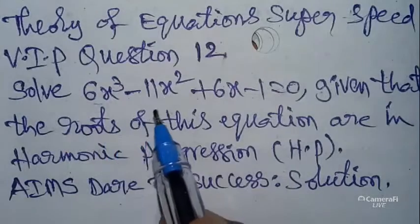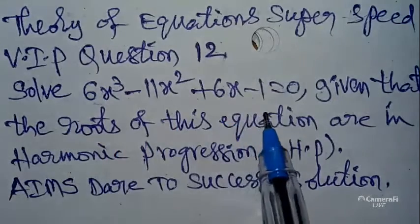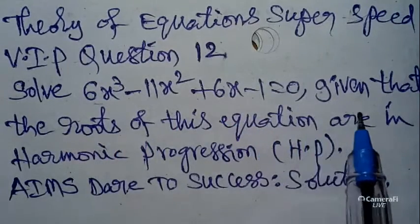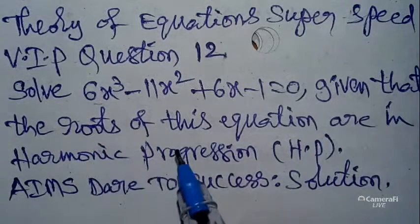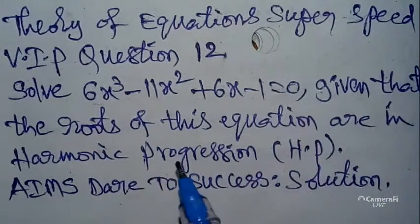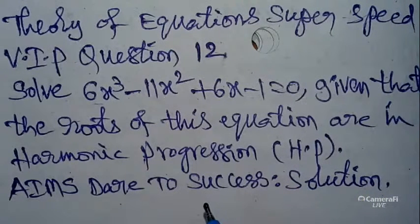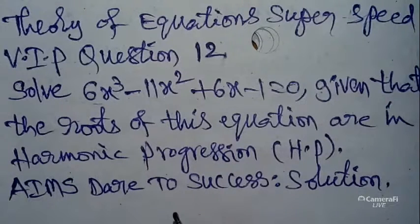Solve: 6x³ minus 11x² plus 6x minus 1 equals zero, given that the roots of this equation are in Harmonic Progression (HP). Aims Dare to Success. Solution: Aims Dare to Success.